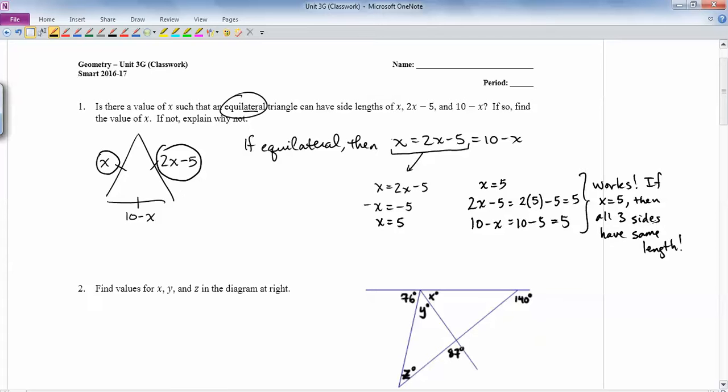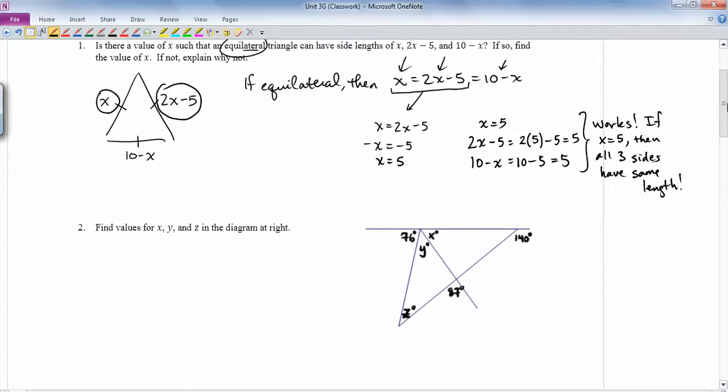Now, if you had picked these two sides to work with and you found x equals 5, and you plug it into here and here and here and you got three different side lengths, well, then no, it's not possible.